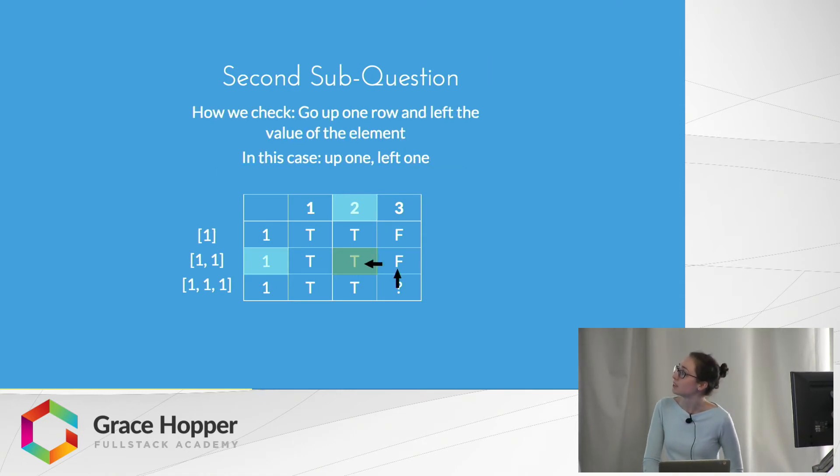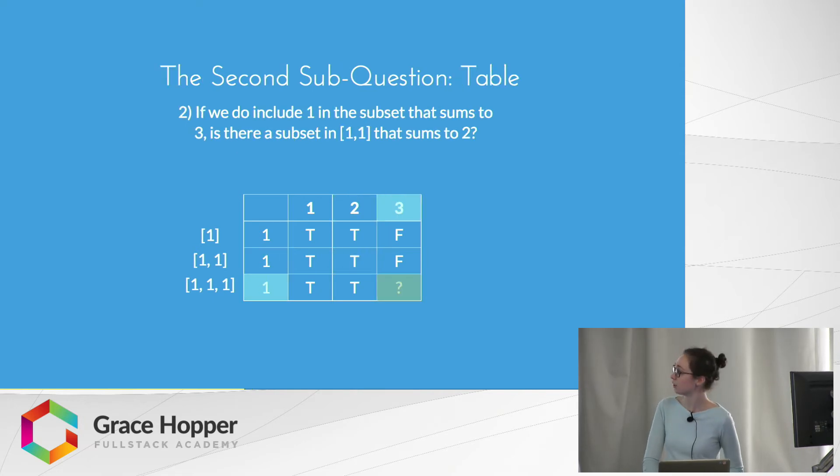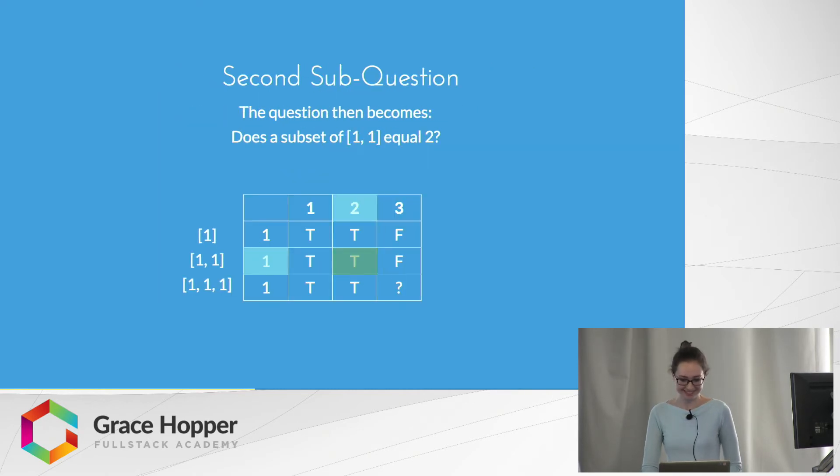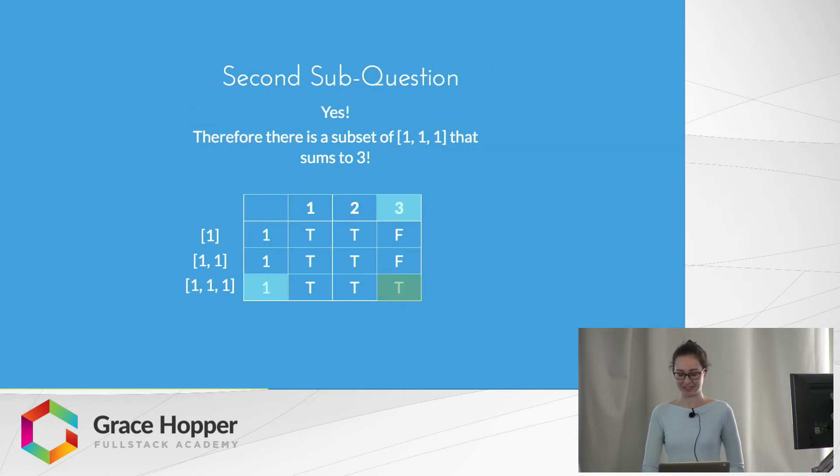The way that we represent this in a table is by going up one row and left the value of the element. So in this case, it's up 1 and left 1. And the value there is 2, so we can say that that's true. We can say it's true.